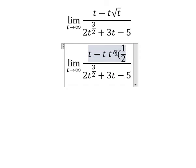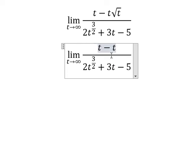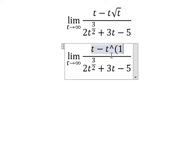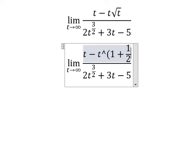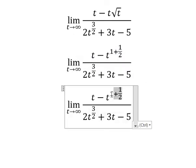So t multiplied by this one will have 1 plus 1 over 2, so we have 3 over 2. So the highest power on the numerator is this one.